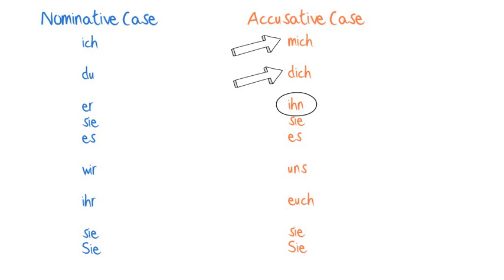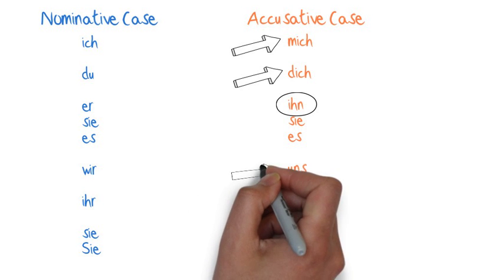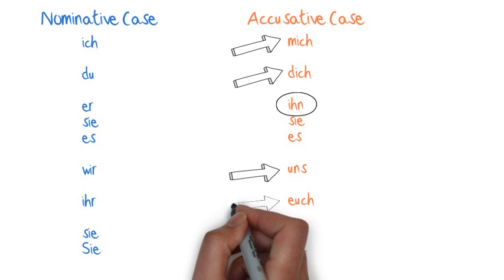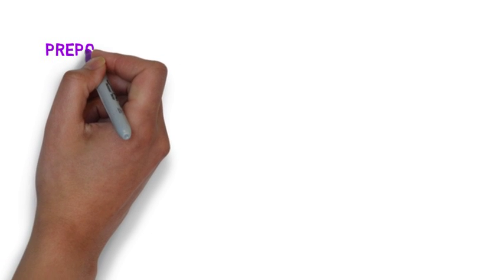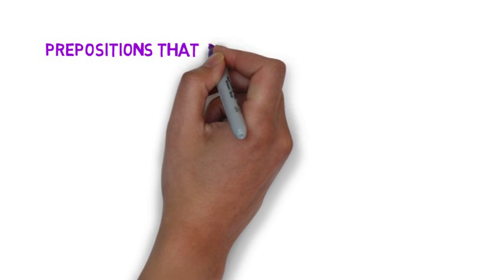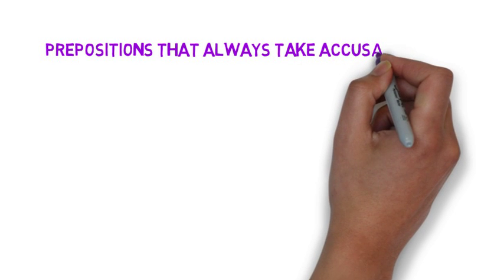The prepositions to watch out for in the accusative case are, of course, the ones that differ from the nominative case. 'Ich' becomes 'mich', 'du' becomes 'dich', 'wir' becomes 'uns', and you're already familiar with 'er' becoming 'ihn'. There are several prepositions in German that always put the nouns following them into the accusative case.